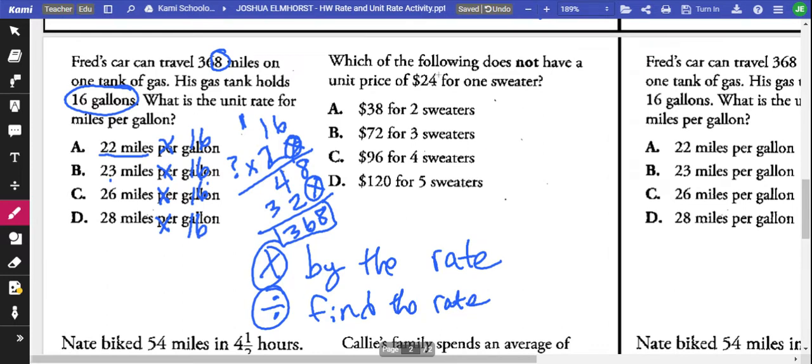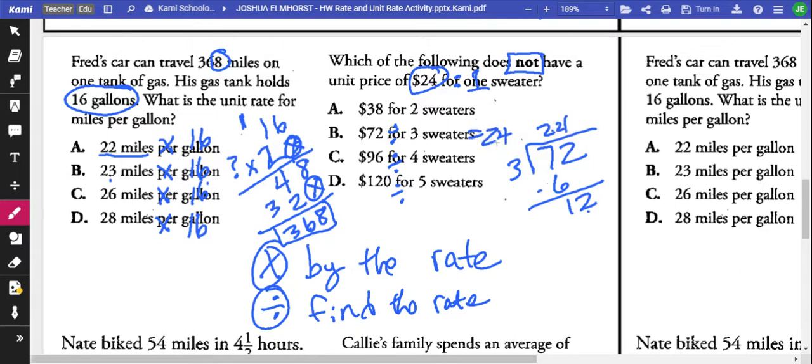Number 2. $24 per one sweater. This says which one is not $24 for one sweater. So if we do 72 divided by 3, 96 divided by 4, 120 divided by 5. Let's check this. 72 divided by 3, 2 times 3 is 6, and 3 goes into 12 four times. So that is 24. This one equals 24. So 2 times 24, we could do it that way. 2 times 24 is 48. 48 is not $38.